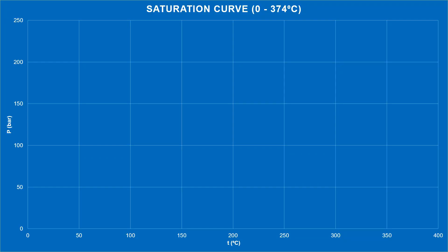Let us draw the relationship between pressure and temperature, and we will be satisfied with the range from 0 to 374 degrees Celsius. We clearly note that the relationship is not linear.